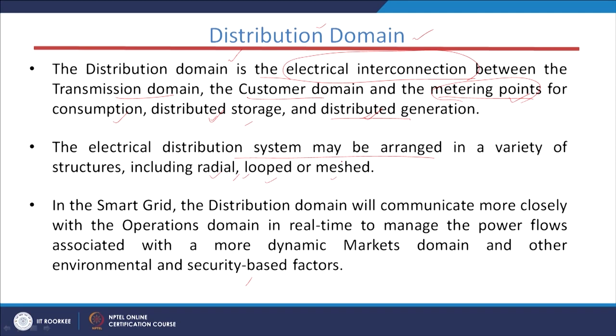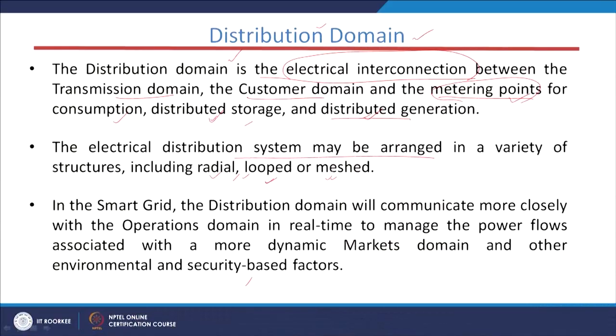The electrical distribution system may be arranged in a variety of structures including radial, looped, and mesh. Generally our distribution system is radial in nature, but it can also be looped and meshed. For reliability, we also use looped and mesh systems.